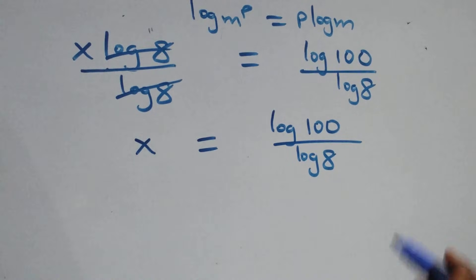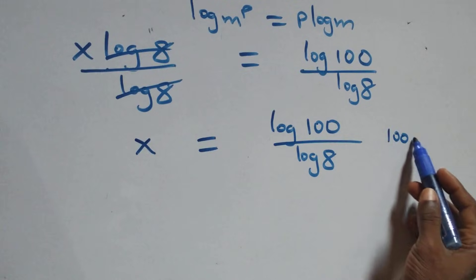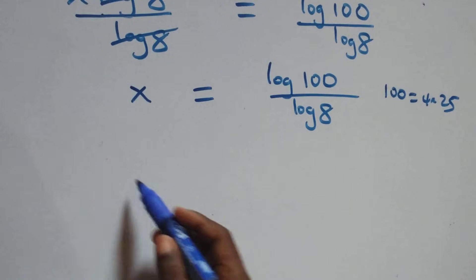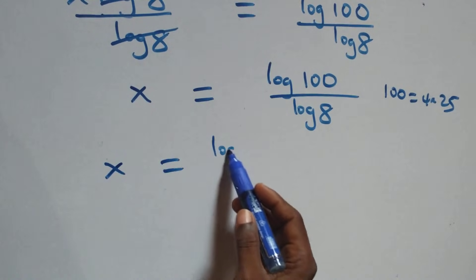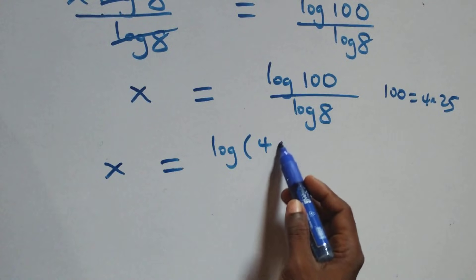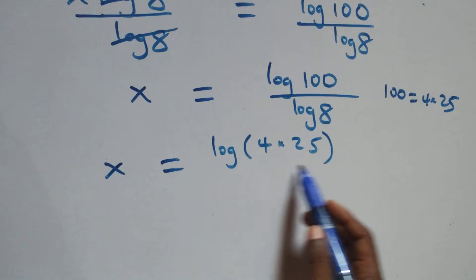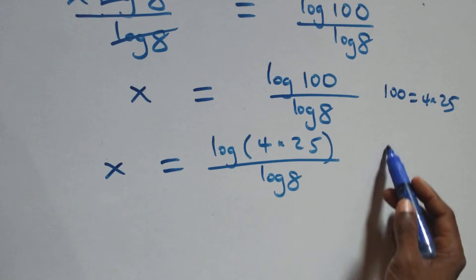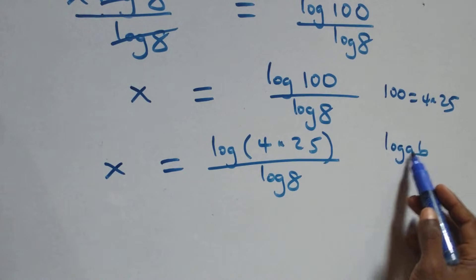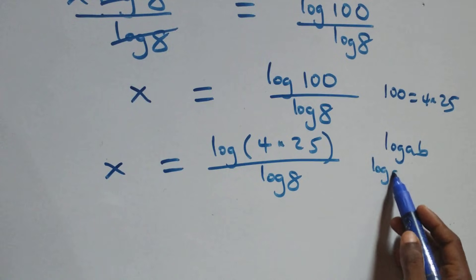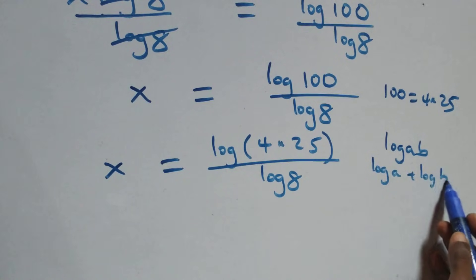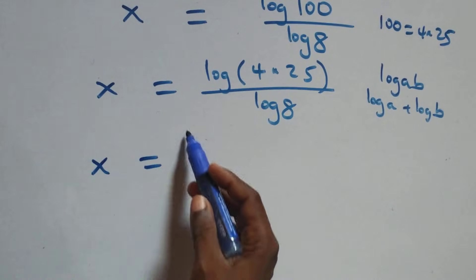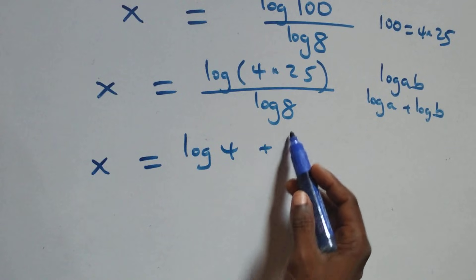Therefore, we write 100 as 4 times 25, which implies we have x equals to log of 4 times 25 over log 8. Then this follows the log product rule: when we have log of a times b, that is the same thing as log a plus log b. So what we have here is x equals to log 4 plus log 25 over log 8.